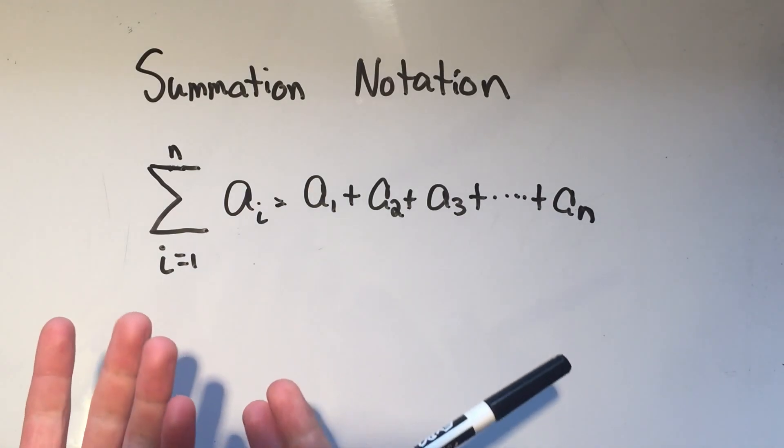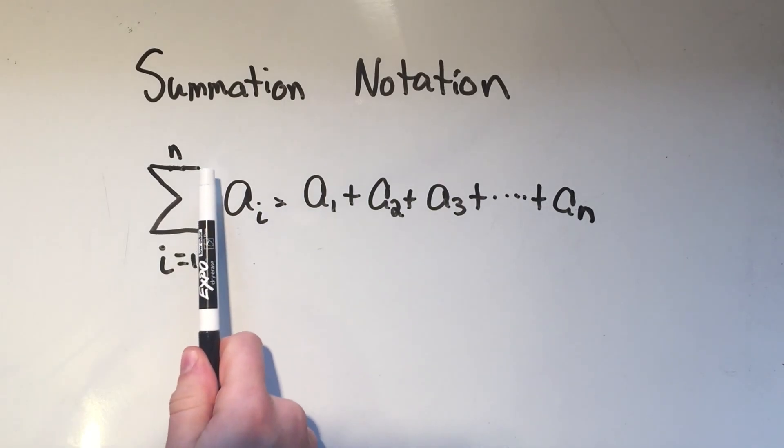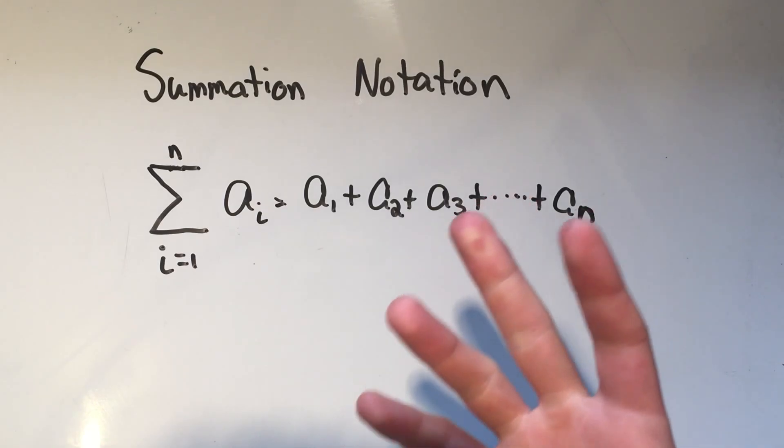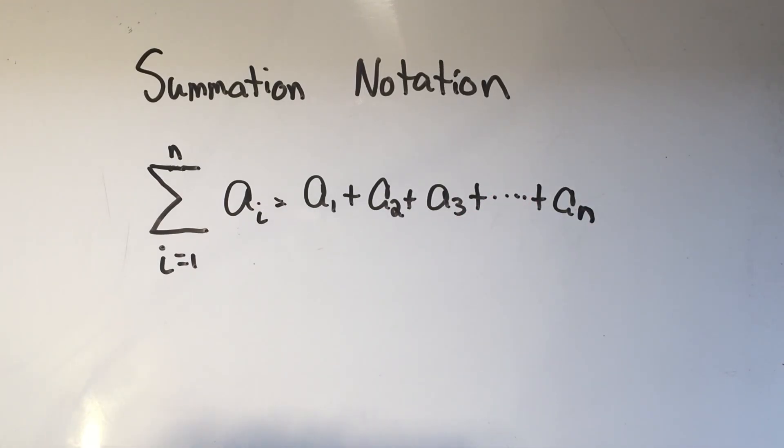The way we use this summation notation is you use this capital sideways M, this is a capital Greek letter sigma for sum, and the way you read this is the sum from i equals 1 to n, and i is what's called the index.